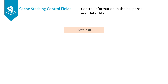The response and data flits both contain the Data Pull field for cache stashing. This field is set to 1 when data pull is requested in response to a stashing snoop. The Data Pull field is set in the response flit for a snoop response without data, and set in the data flit for a snoop response with data.